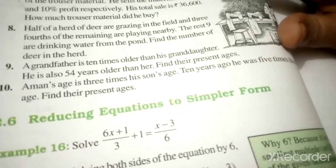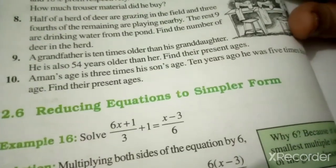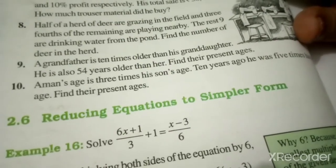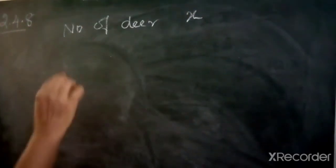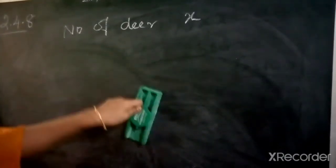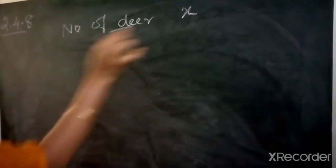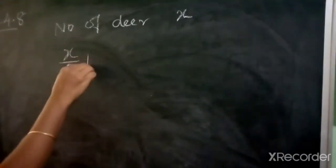Hausson buys two kinds of cloth materials for school uniforms. Shirt material costs Rs. 50 per meter and trouser material costs Rs. 90 per meter. For every 3 meters of the shirt material, he buys 2 meters of the trouser material. He sells the material at 12% and 10% profit respectively. His total sales is Rs. 36,600. How much trouser material did he buy?